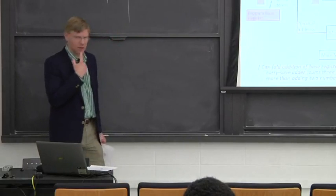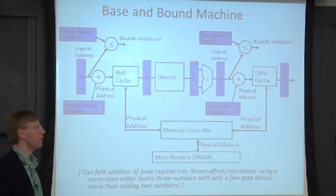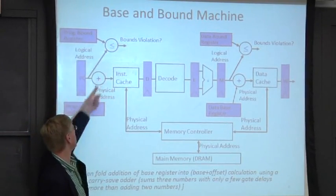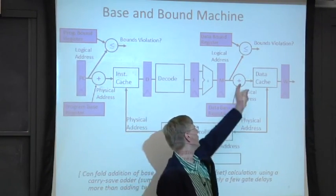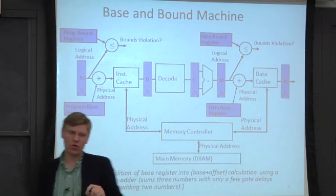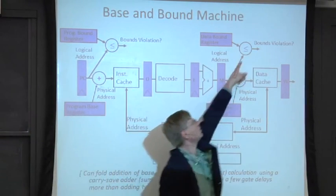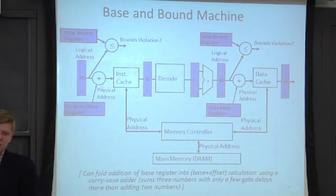Okay, so let's take a look at how this fits into the pipeline here. So here's our pipeline. We want to add base and bound registers. It's actually not so bad. We have to add an adder here to add in the base into the program counter. And we have to add an adder for the data base register into all of our loads and stores. And then we need to add a comparator here, a comparator there to check to make sure we don't fall outside of our bounds.